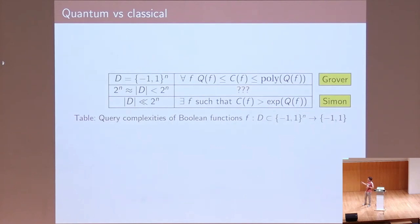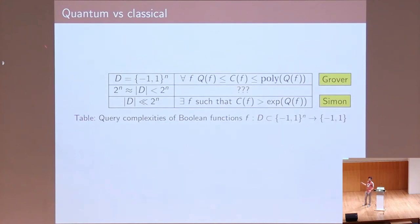For total Boolean functions, where the domain is the full Boolean hypercube, the classical query complexity is upper bounded by the quantum query complexity to the power four. So for total Boolean functions, we cannot obtain super-polynomial quantum speedups — only polynomial ones, as Grover's algorithm shows. For structured problems where the domain is a very small corner of the hypercube, you can obtain exponential quantum speedups, as Simon's algorithm demonstrates.